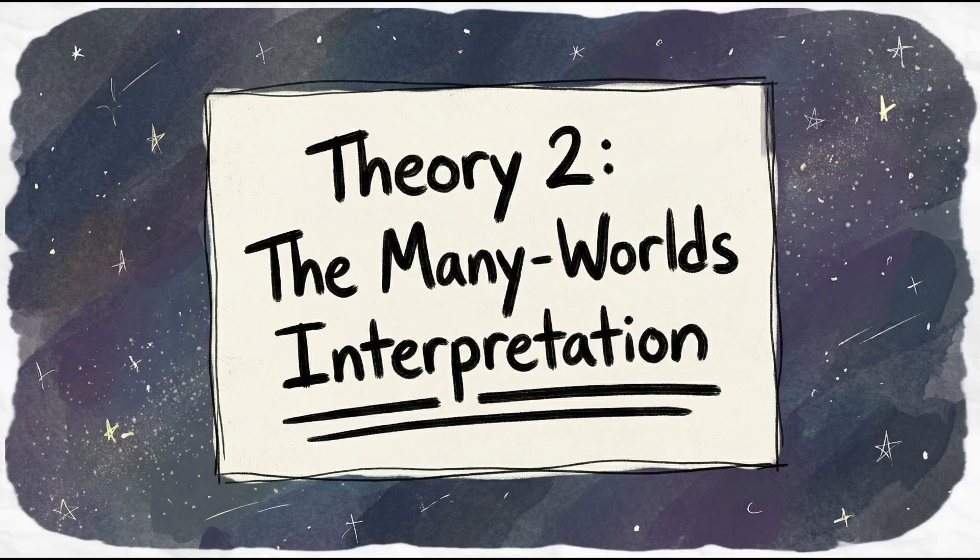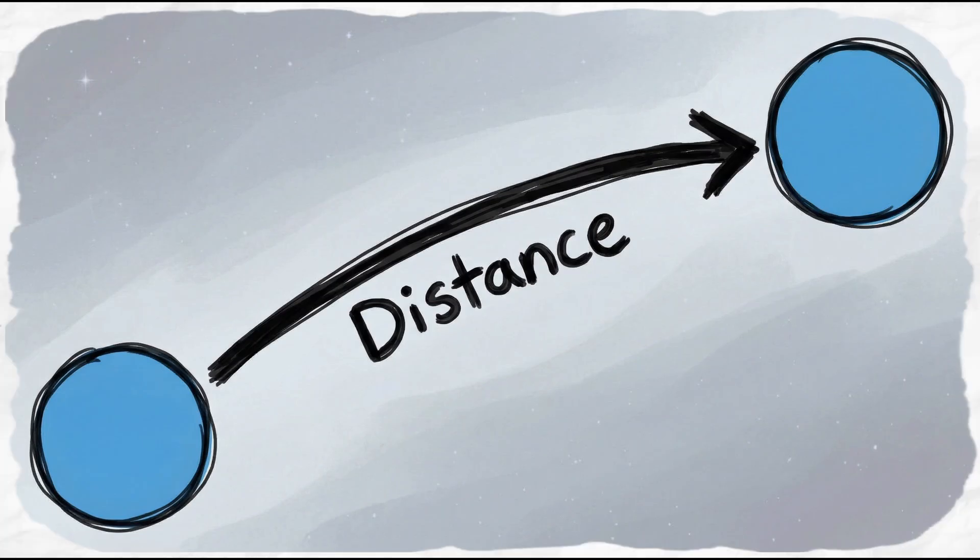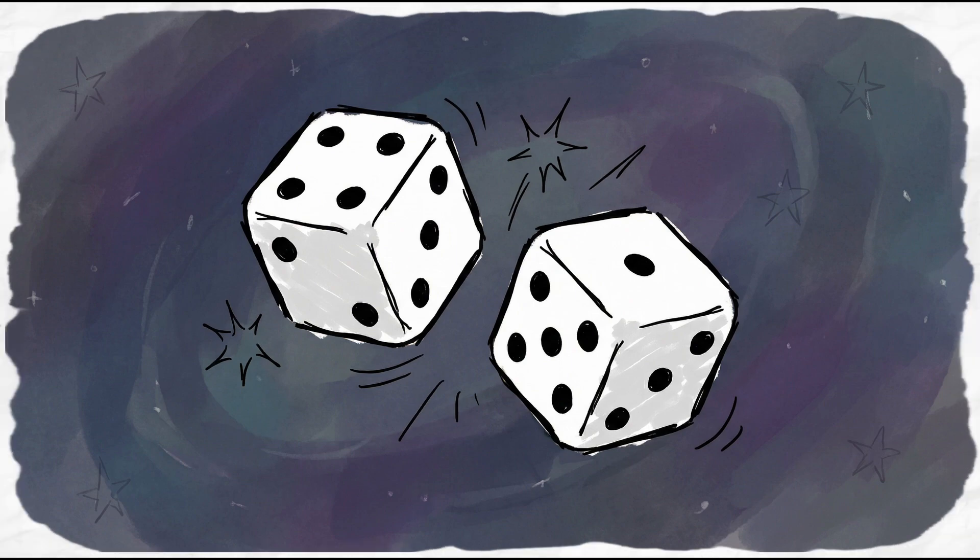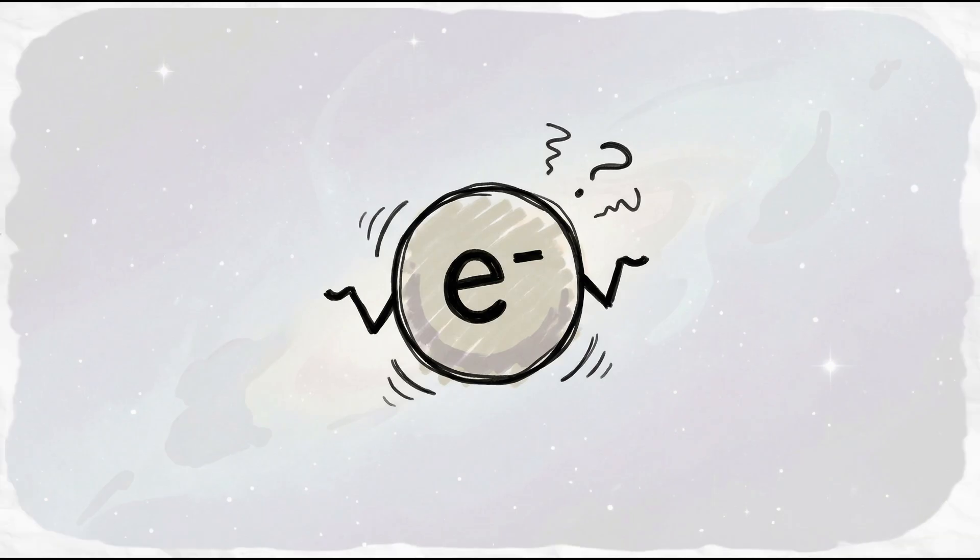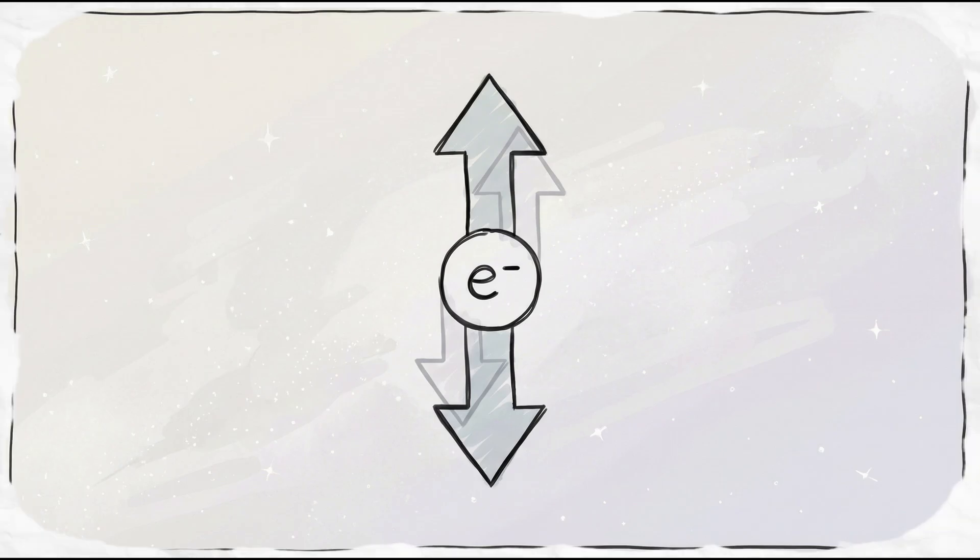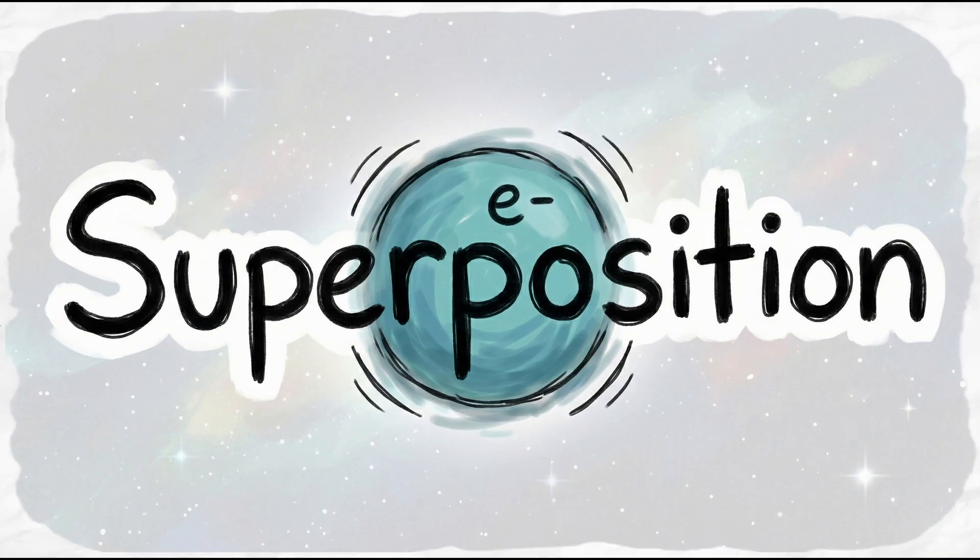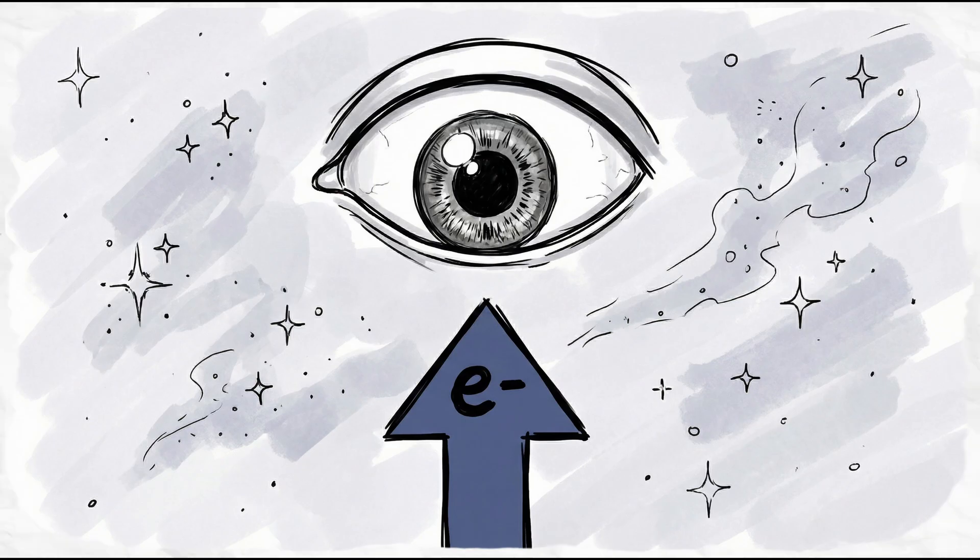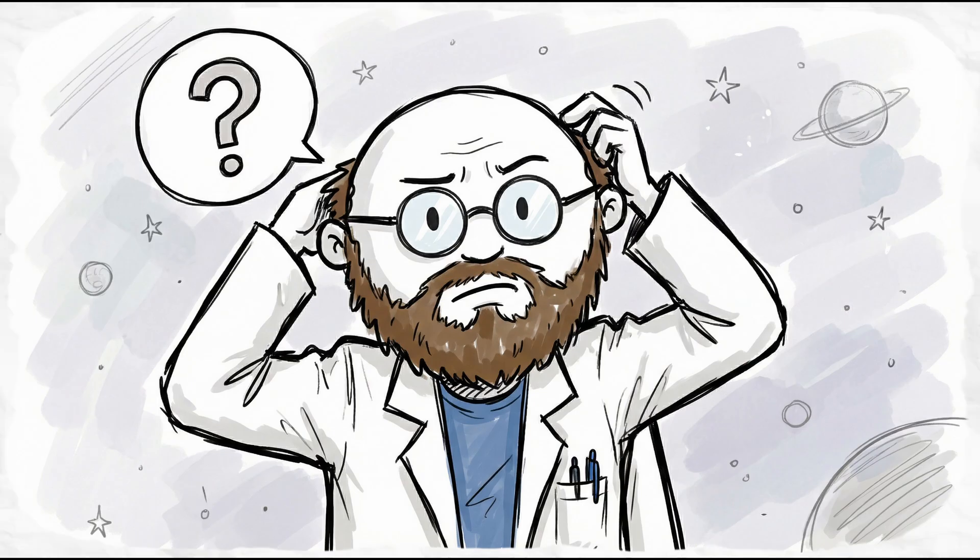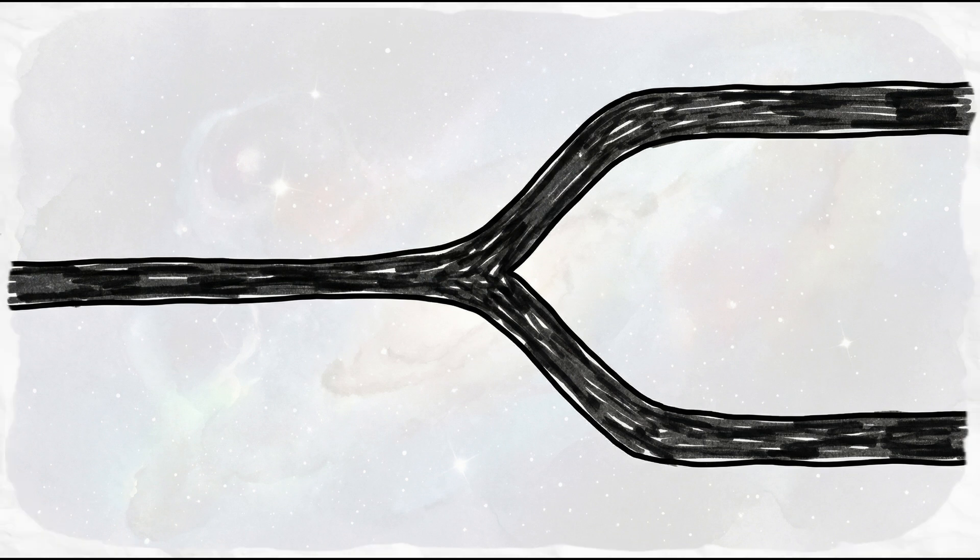Theory 2, the many worlds interpretation. The bubble theory separates worlds by distance. This next one separates them by luck. In the quantum world, particles are indecisive. An electron can spin up and down at the same time. This is superposition. Usually, we say the particle picks one state when we look at it. But physicist Hugh Everett asked, what if it doesn't pick? What if the universe just splits to handle both options?